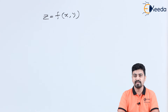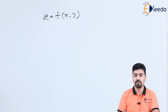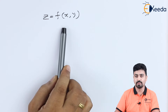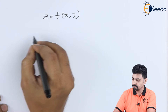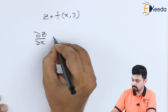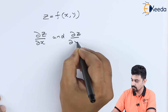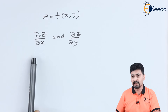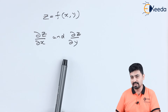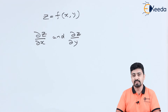Let us assume z is a function of x and y, so we can write z is equal to f of xy. A first order partial differential equation will only involve first order partial derivatives of z, which are del z by del x and del z by del y.